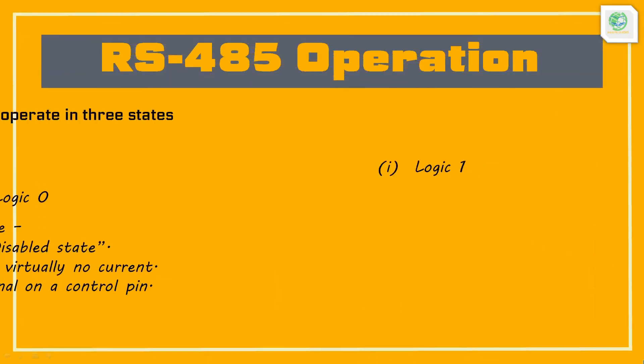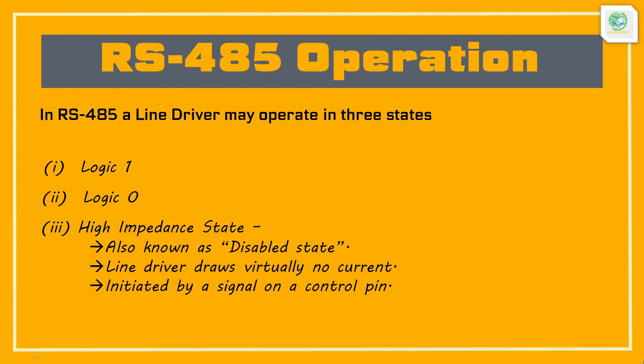In a RS-485 network, any line driver may work in three states: logic 1, logic 0, and high impedance. Logic 1 state is when a logic 1 is being transmitted. Logic 0 state is when a logic 0 is being transmitted. In the high impedance state, the line driver draws virtually no current and appears not to be present on the line. This is known as the disabled state and can be initiated by a signal on a control pin on the line driver.